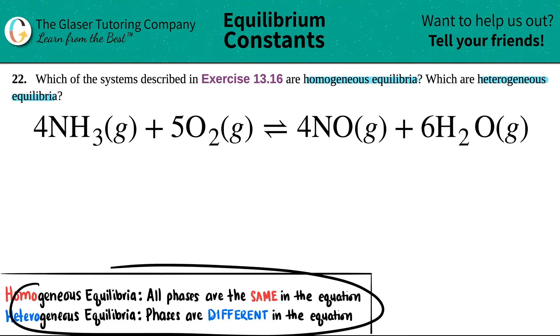Well here are the rules down here. It's pretty simple. Homogeneous equilibria - all the phases throughout the whole equation are the same. Heterogeneous equilibria - there are different phases in the balanced equation.